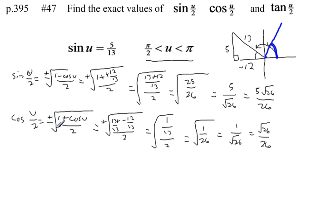Last but not least, to find the tangent of u over 2. There's a formula for a half angle of a tangent, but an easier way is to remember that tangent equals sine over cosine. Since I already found sine and cosine, we can divide these two quantities. If I take sine over cosine, the 26 will cancel, the square root of 26 will cancel, the tangent of u over 2 is just going to equal 5.